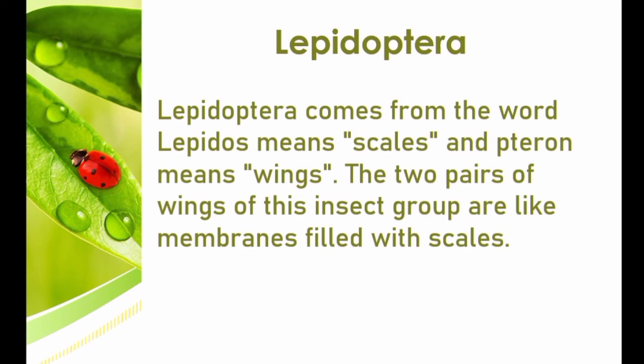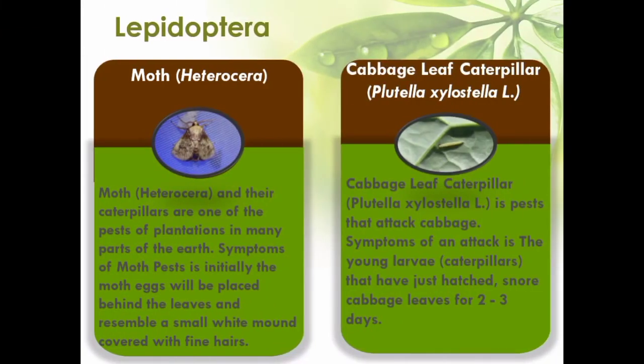The next order of plant pests is Lepidoptera, from the words Lepidos meaning scales and Pteron meaning wings. The two pairs of wings of this insect group are like membranes filled with scales. Lepidoptera includes moths or Heterocera, whose caterpillars are major plantation pests worldwide. Symptoms of moth pests initially show eggs placed behind the leaves, resembling a small white mound covered with fine hairs.